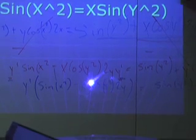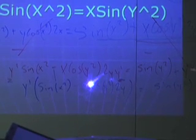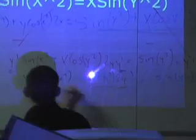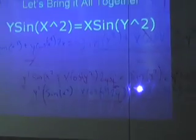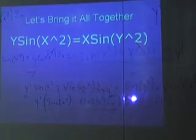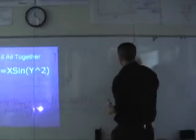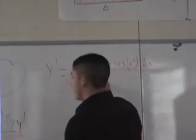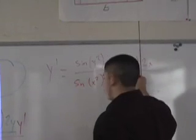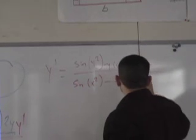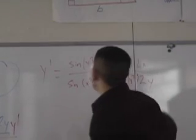Since our answer has to be in y prime form, we divide both sides by the factored expression. So y prime equals sine of y squared minus y cosine of x squared times 2x, all divided by sine of x squared minus x cosine of y squared times 2y. This is our final answer.